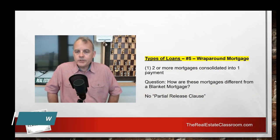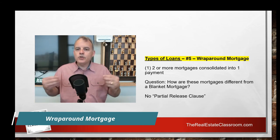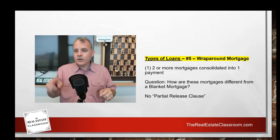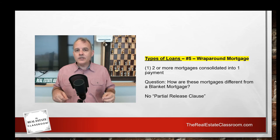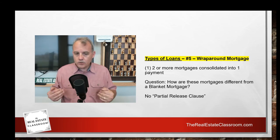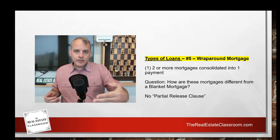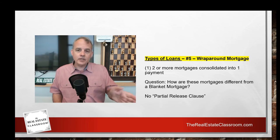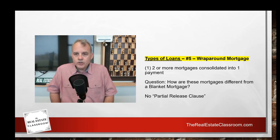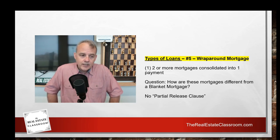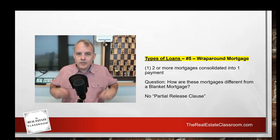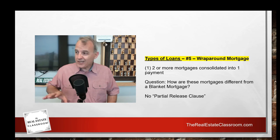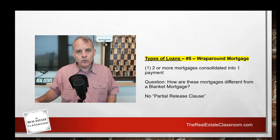The fifth type is a wraparound mortgage — where two or more mortgages are consolidated into one payment. The key difference from a blanket mortgage is that a wraparound mortgage has no partial release clause, so you cannot sell off individual properties and remove the mortgage lien against each one — unlike a blanket mortgage, which does allow that. Wraparound mortgages are rarely used anymore. When they do occur, it's usually a highly qualified buyer with substantial assets at a local bank, which holds the loan in-house since these can't be sold on the secondary mortgage market.